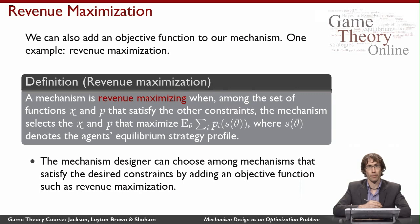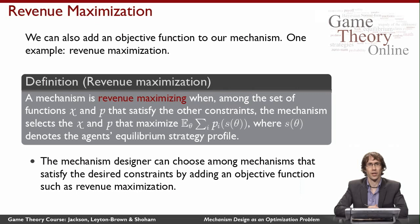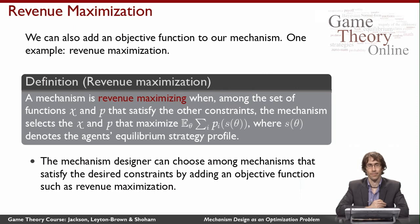Now let's think about objective functions we might place on our mechanism. One objective is revenue. Maybe I'm selling something and I want a mechanism that does the best it can — satisfies constraints like individual rationality so people will want to participate, and maybe weak budget balance so I never lose money, and is truthful. Within the space of mechanisms satisfying those constraints, I want to pick the one that gives me as much revenue as possible. I'll call that mechanism revenue maximizing.